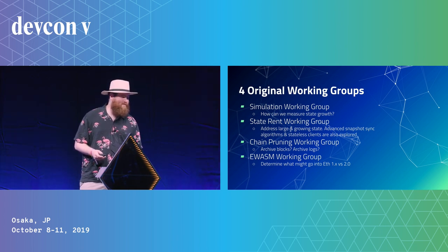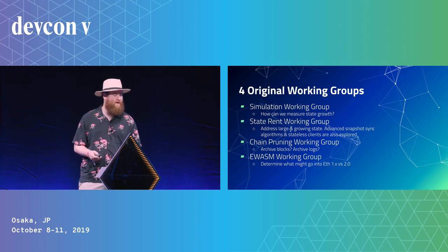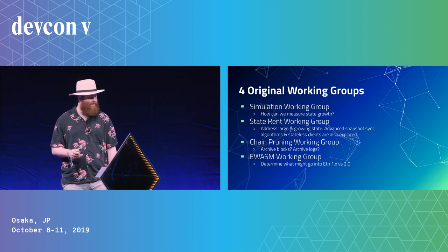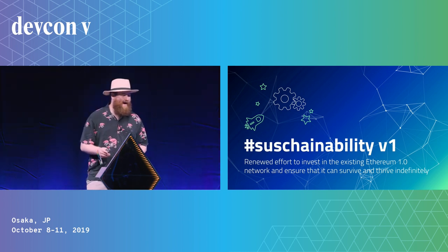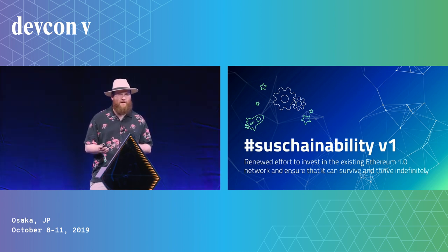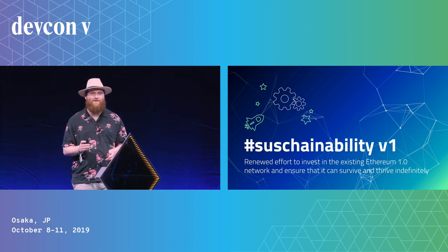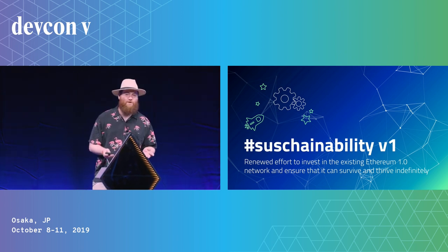Then there was the eWASM working group, which determines what from eWASM is going into 1x and 2.0. A lot of eWASM workshops and talks are around DevCon, so feel free to jump into those for more information. At the time of Prague — basically between late last year and early this year — sustainability meant a renewed effort to invest in the existing ETH 1.0 network to ensure it can survive and thrive indefinitely. That's the first version of what sustainability is; I'll get to the second one later.